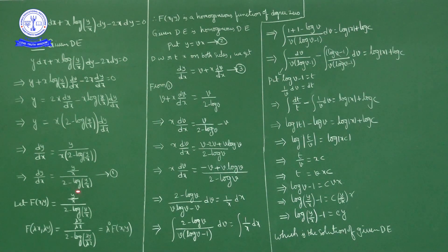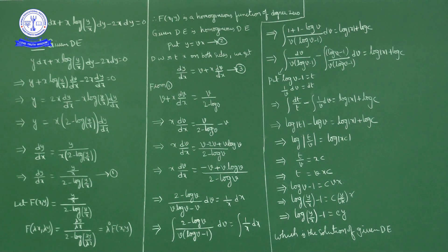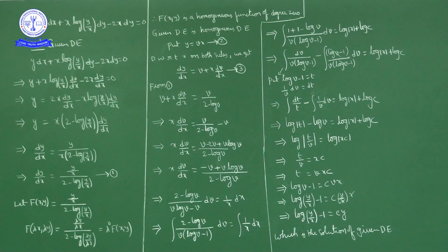Now we will prove that this differential equation is homogeneous. We take the RHS of equation 1 as f(x, y). We show that f(x, y) is a homogeneous function of degree 0. To do this, we replace x by λx and y by λy, then calculate f(λx, λy). If f(λx, λy) equals λ^n times f(x, y), then f(x, y) is a homogeneous function of degree n.